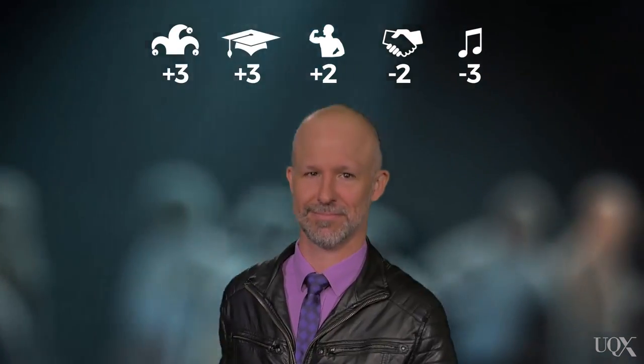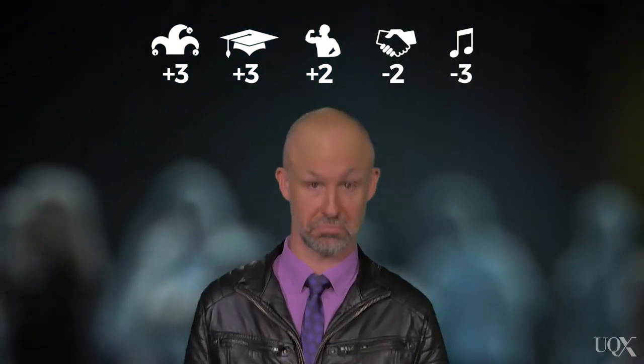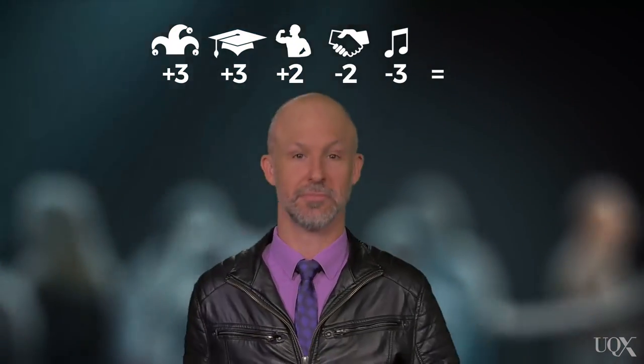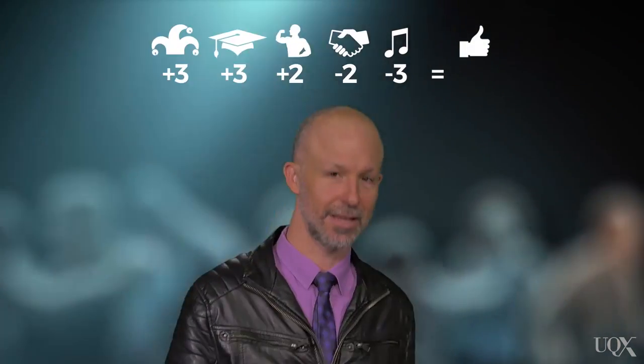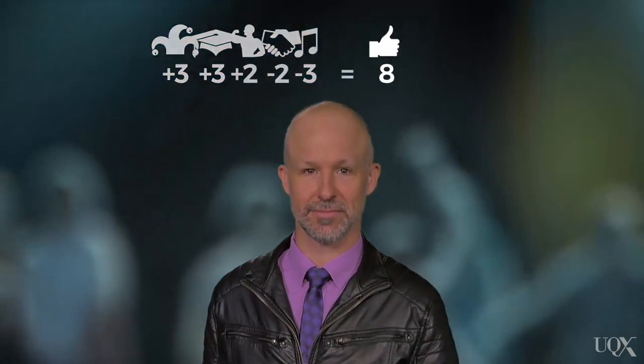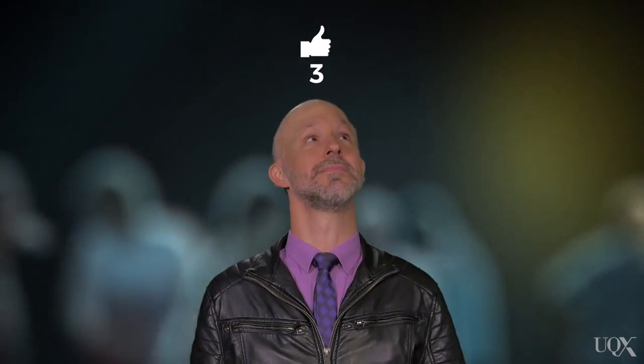According to the summative model of impression formation, we could arrive at an overall impression of Bob by simply adding all of our reactions or likeability ratings up, and we arrive at an overall impression of 3. Nice to meet you, Bob — that must mean we like you.